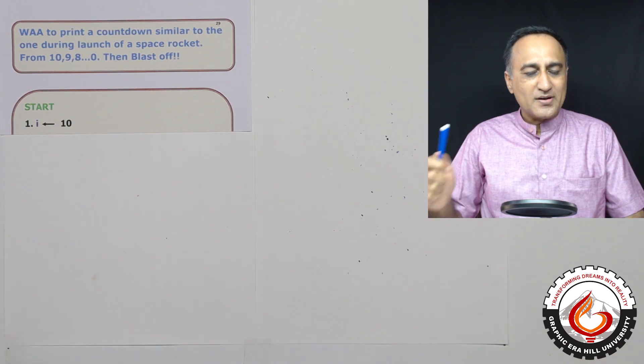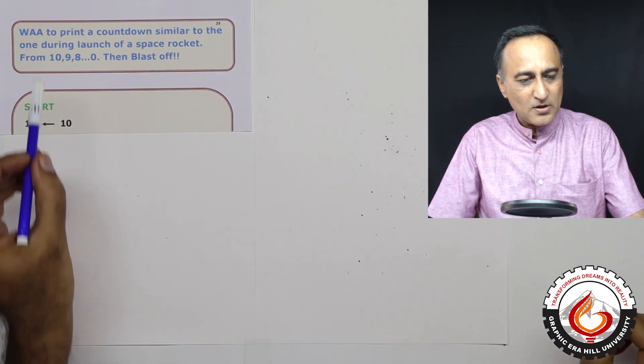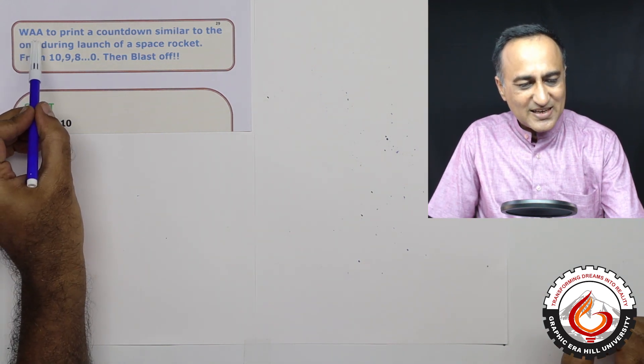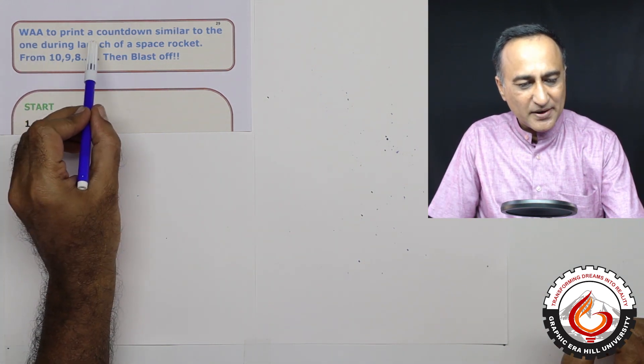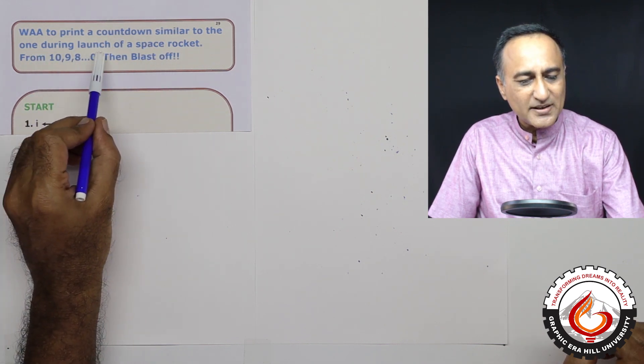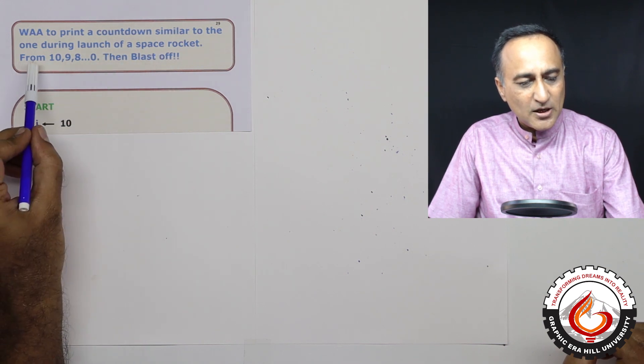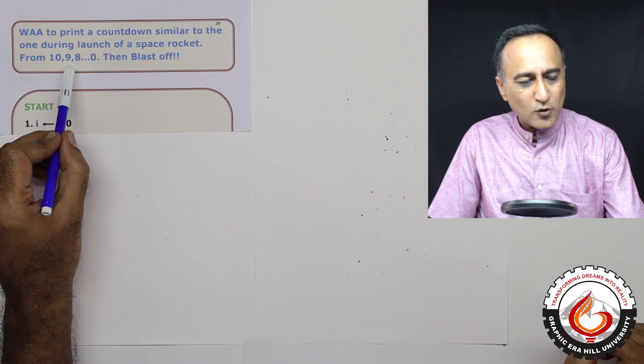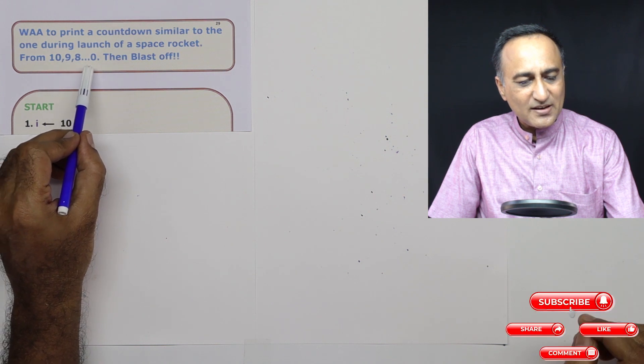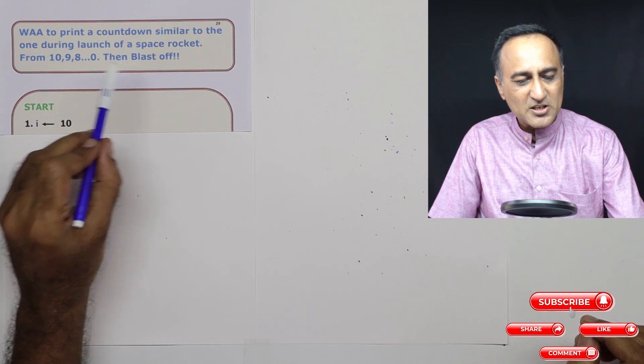So let's try to first understand what this problem is all about. The problem is asking us to write an algorithm to print a countdown message similar to the one which is seen on the television screen during the launch of a space rocket. It should start printing from 10, go to 9, 8, 7, all the way till zero, and after zero is printed, it should print the message blast off.